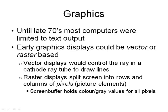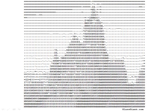That was a quick run-through of I/O devices. Now for an equally quick look at computer graphics. Most computers until the late 1970s were limited to text output. Early graphics displays were either vector or raster based. Vector displays controlled the beam of light in a cathode ray tube to draw lines — fine lines, typically one color, good for shapes but not ideal for text. Raster displays split the screen into rows and columns of pixels, with a screen buffer holding color values for all pixels.